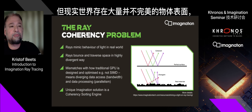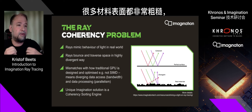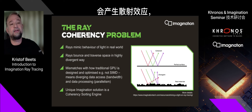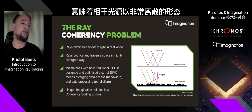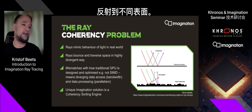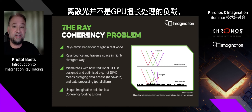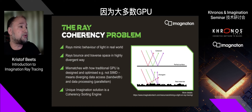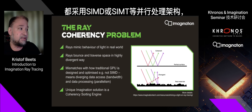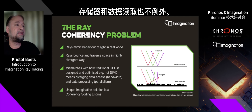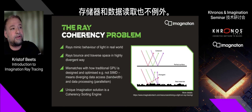Unfortunately, a lot of the realism in the world comes from non-perfect surfaces. A lot of real materials are very rough and they cause diffuse effects, meaning that rays that come in coherently actually bounce back into the scene in a very divergent way. Divergence is not something that GPUs appreciate, because most GPUs are built around very parallel processing architectures, such as SIMD or SIMT architectures.